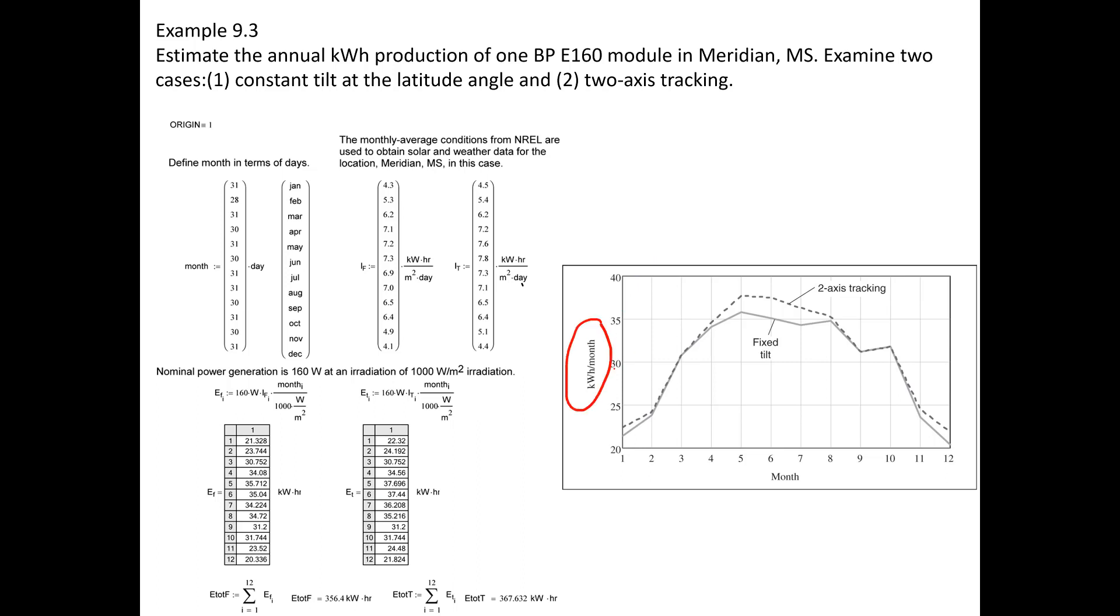You can see here the difference in the total kilowatt hour output of the cell per month comparing the two-axes rotation and the fixed tilt angle, and you can see that especially in the months between May and July, there's a difference where the two-axes rotation has more power output, significantly more than the fixed angle, at least in this particular case.